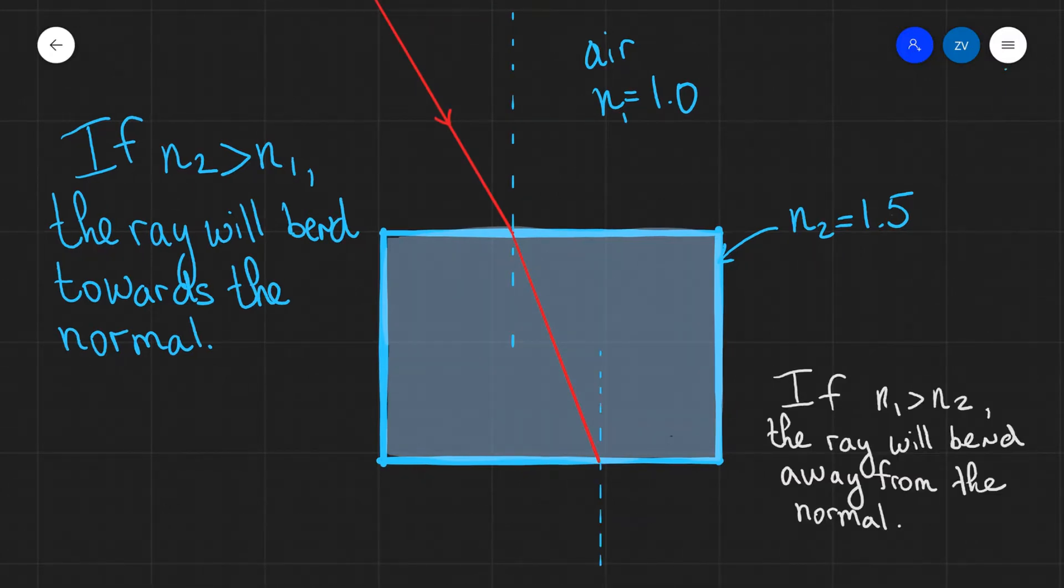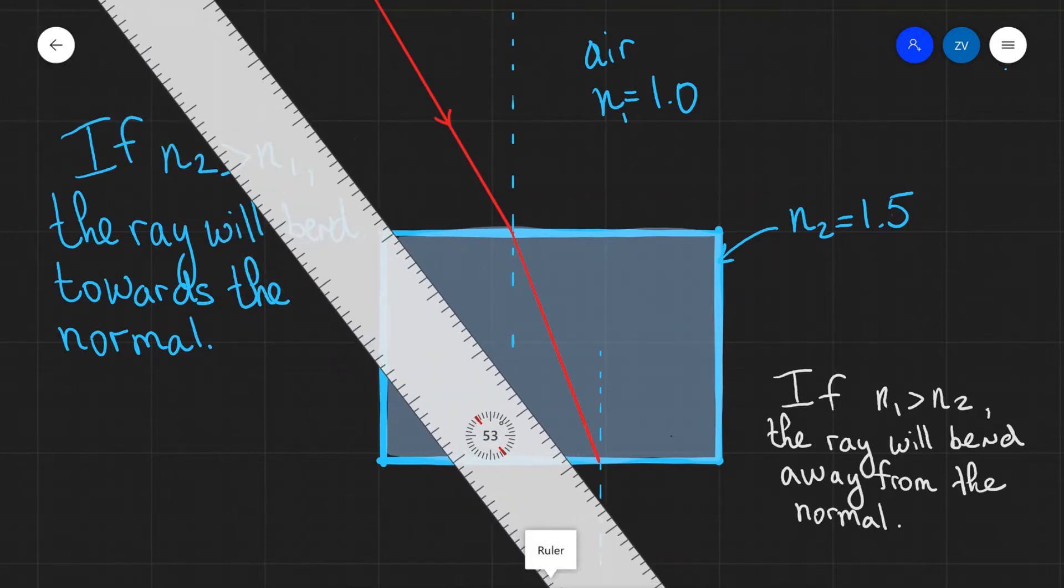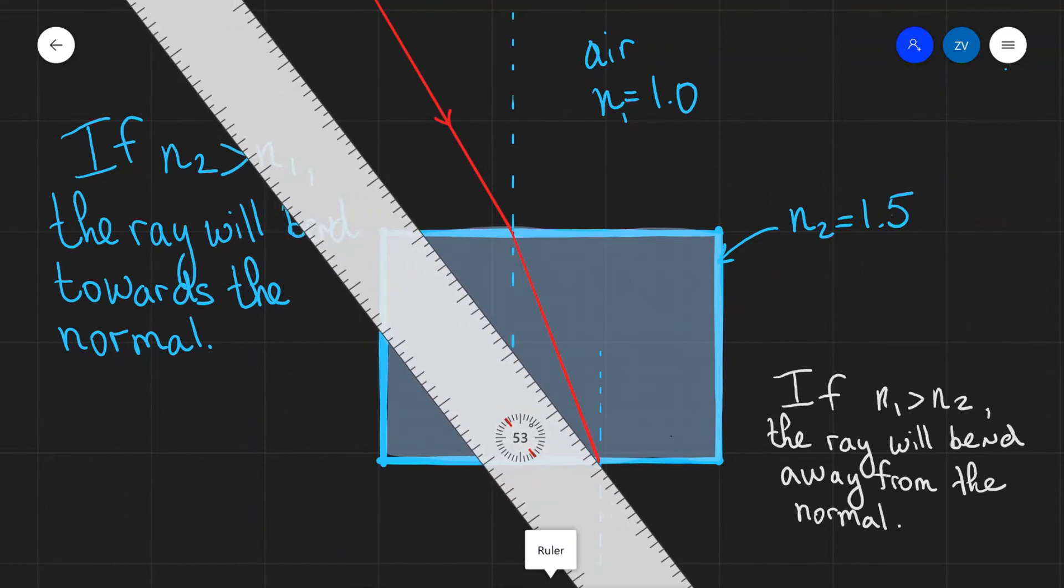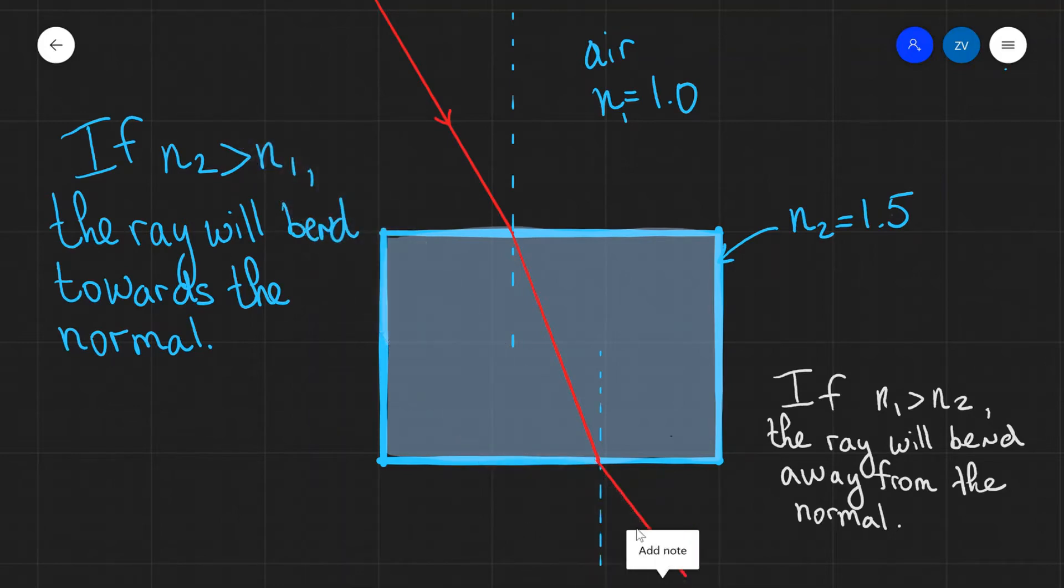On the other hand, if a light ray is going from a medium of a higher refractive index to a medium of a lower refractive index, such as air for instance, it will bend away from the normal. For instance, this light ray over here will no longer carry on in a straight line, but will bend away from the normal. And we can draw this like so. So we can see that this ray has now bent away from the normal.